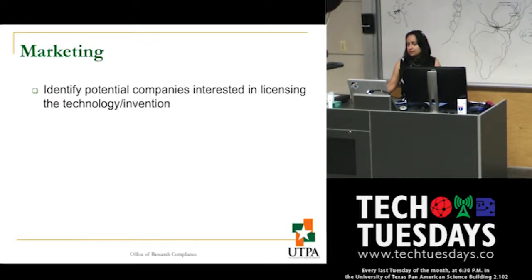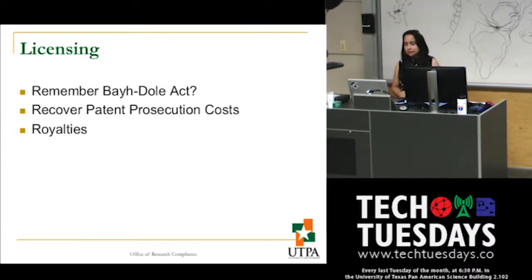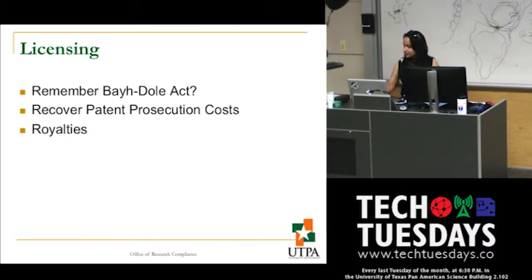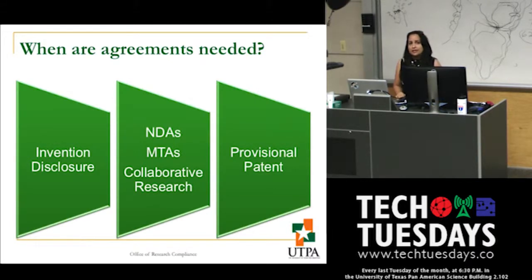The Office of Technology Transfer then moves toward finding a potential licensee. When a license is executed, remember the Bayh-Dole Act — if the research was federally funded, we must reserve that right for the federal government and communicate that to our licensee. The first thing the university does with a license agreement is recover all patent prosecution costs, which are very expensive. The agreement also describes how royalties will be distributed on campus. Between the time you make an invention disclosure and before a provisional or final patent is filed, NDAs, MTAs, and collaborative research agreements are very useful.